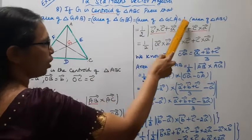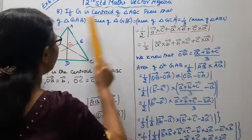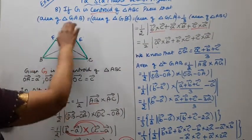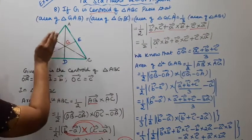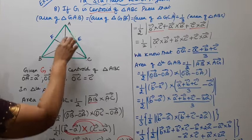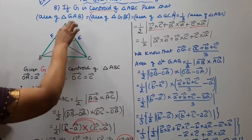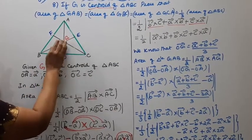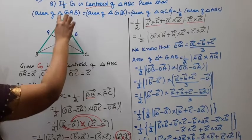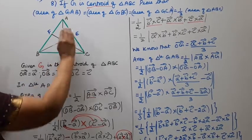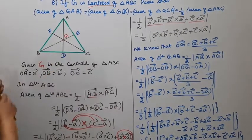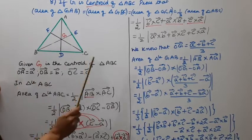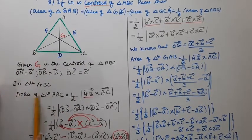This gives one-third area of triangle ABC. Now we need to prove that area of GAB = area of GBC = area of GCA = one-third area of triangle ABC. We will prove it now.